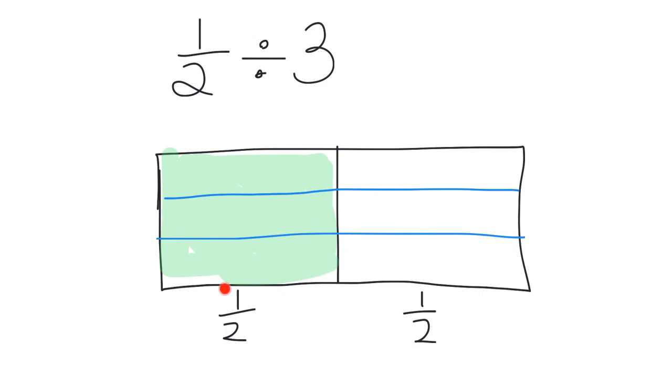So one-half divided by three is one-half cut into three parts. And so I want to look at this one part right here, this piece right here. So that's one-half divided by three. And I can see that that one little piece is one-sixth of the whole thing. Remember this is one whole thing. This is one-half cut into three parts. So one-half divided by three is equal to one-sixth. That's this piece right here.